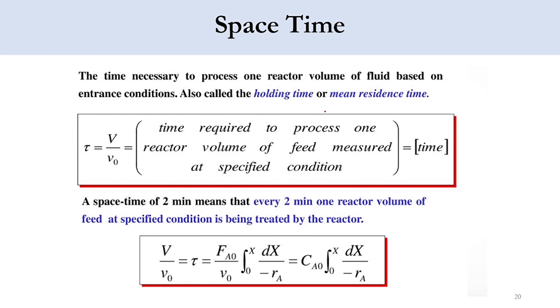Moving on to the last part: space time. What is the space time actually? It is the time which is required to process one reactor volume of fluid based on the entrance conditions, or it is specified as the holding time or mean residence time. Its definition is space time equals volume over volumetric flow rate. Volume unit is cubic meter, volumetric flow rate is cubic meter per time, so units will be time.